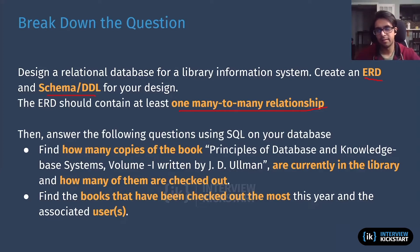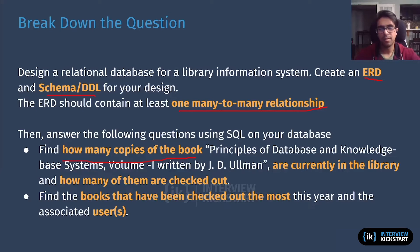But if we get into breaking down the actual SQL questions, that's where we get some interesting details on what we actually need to implement in our solution. It says we're going to want to track how many copies of the book. Now it's getting interesting, because it's telling me that in my system I'm going to be tracking books and multiple copies of a book. So it sounds like there's going to be a book entity, and then the library can likely have multiple copies — so I'm going to need entities to track that.